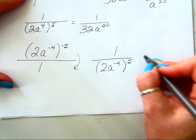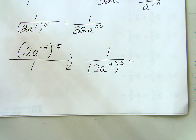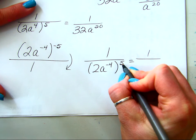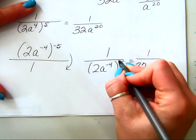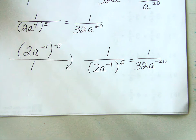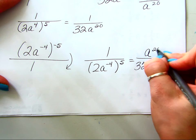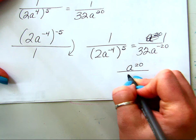So the answer ends up being: 1 over 2 to the positive 5th (which is 32) times a to the negative 4 times 5, which is negative 20. Then I move that a to the negative 20th back up. So my final answer is a to the positive 20th over 32.